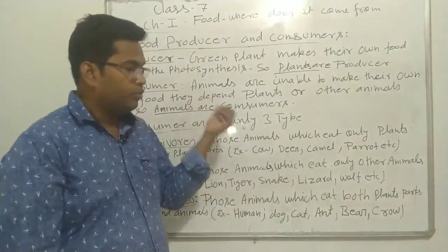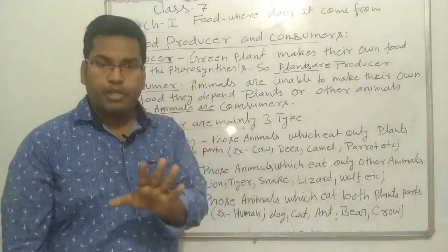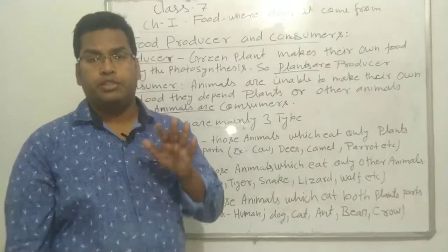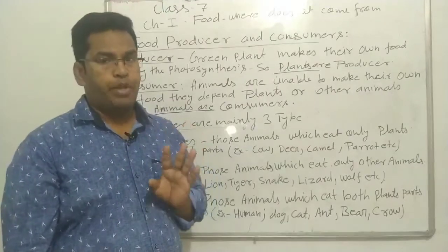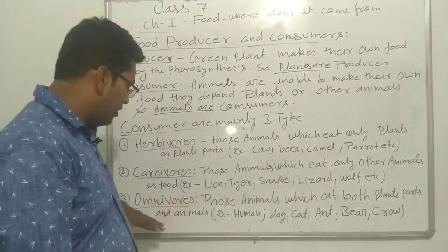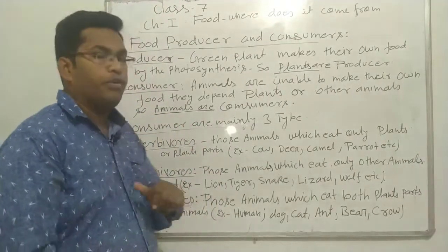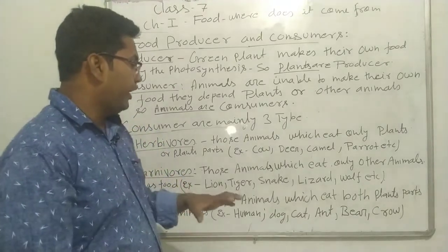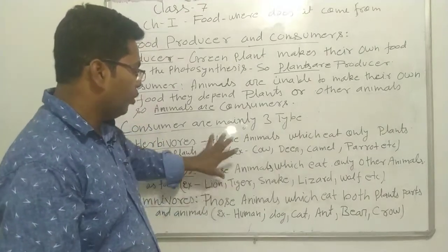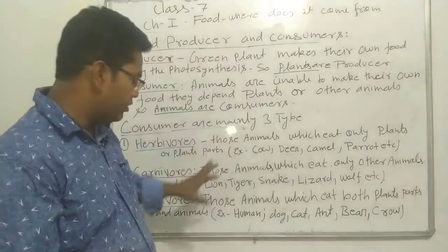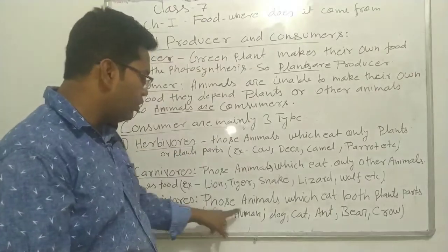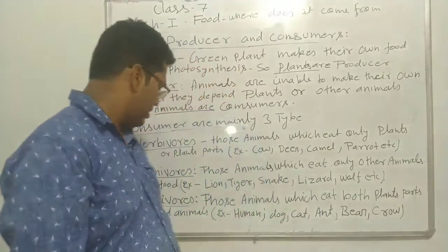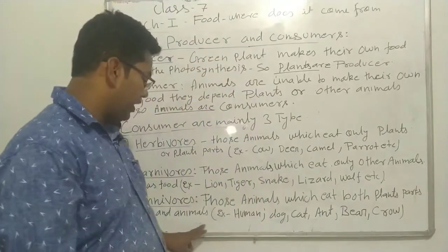Herbivores eat only plants. Carnivores eat only animals. The third type is omnivores. Omnivores are those animals which eat both plants and animals as food.